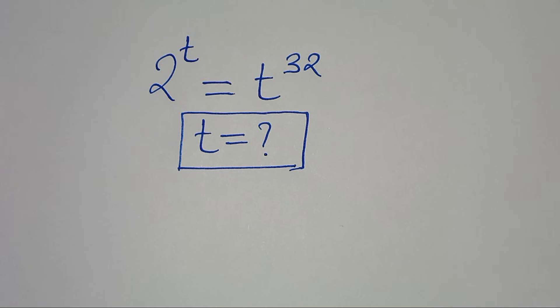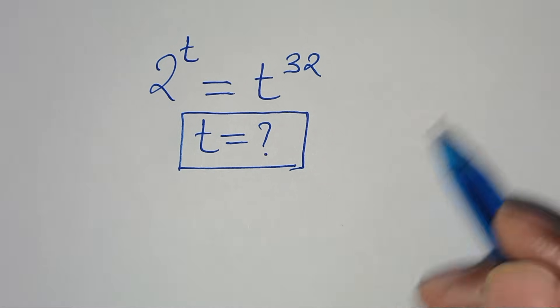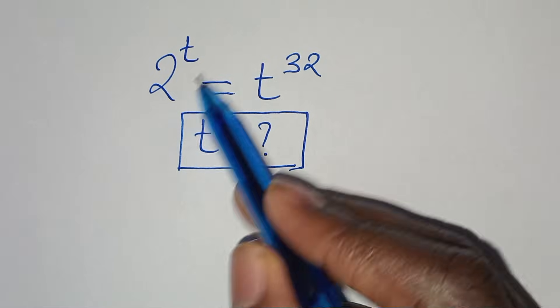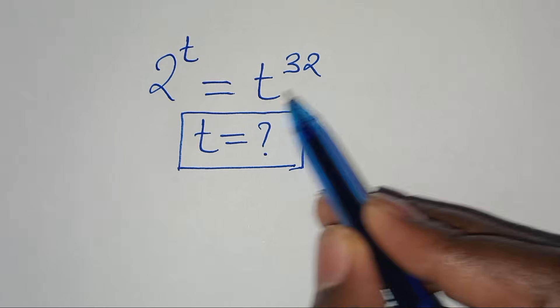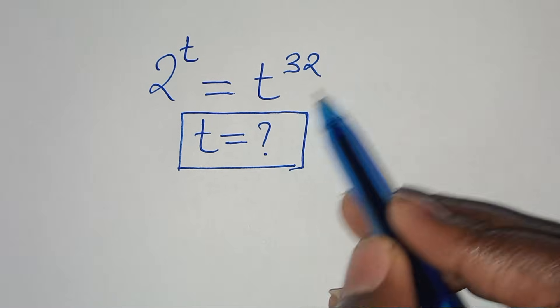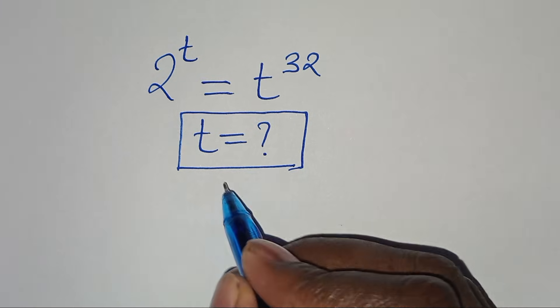Hello everyone, you are welcome to solve this nice exponential equation, which is 2 to the power of t, equal to t to the power of 32. So what is the value of t?